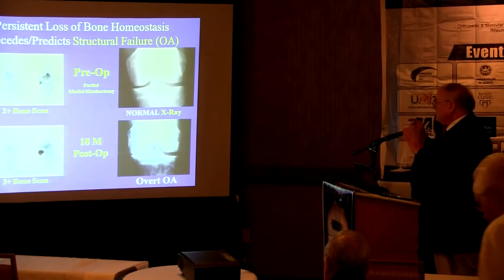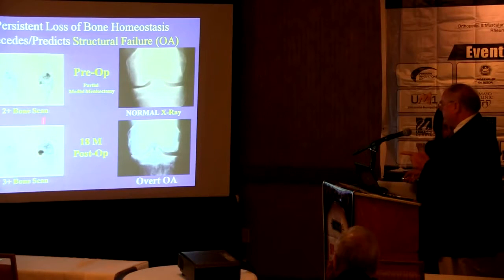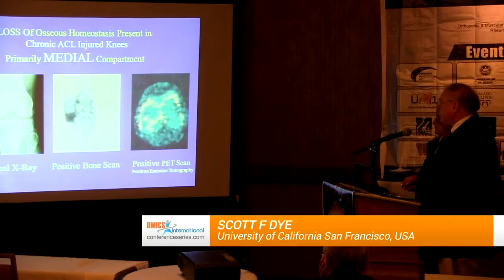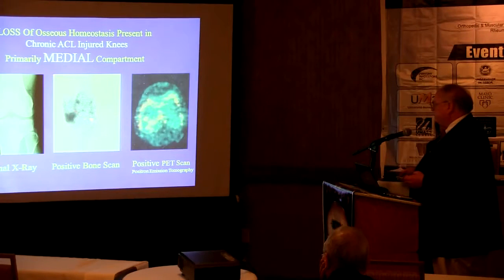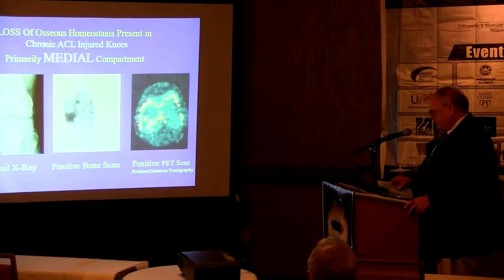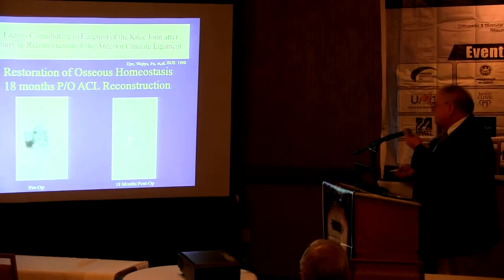Persistent loss of bone homeostasis precedes structural failure. A bone scan that gets worse instead of better predicted overt failure and osteoarthritis — going from normal x-ray to advanced arthritis in a short period of time. In chronic ACL-injured knees, it is the medial compartment that pays the price over time, as a PET scan confirms. Here is a pre-op patient with a chronic ACL-deficient knee; we did ACL reconstruction, and 18 months later we achieved tissue homeostasis proven with a normal bone scan.